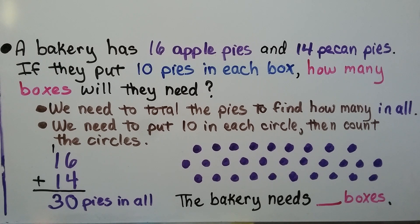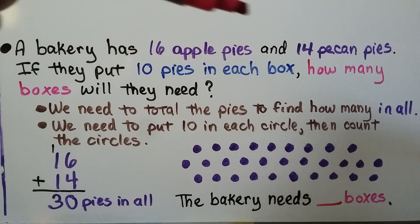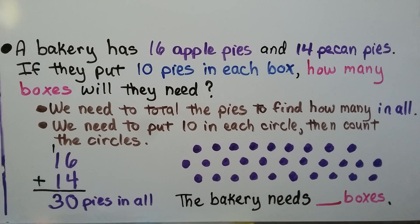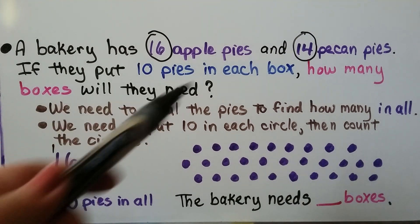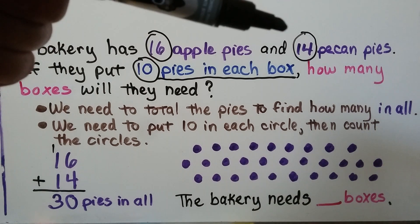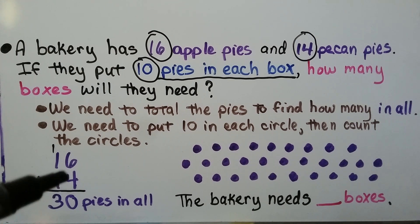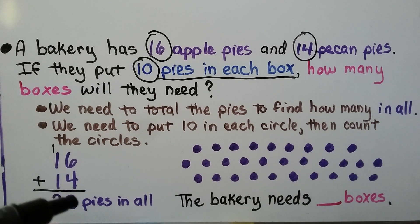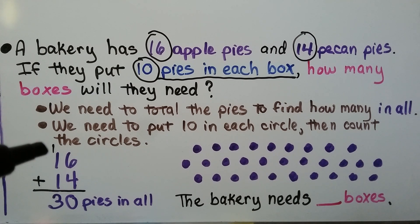A bakery has sixteen apple pies and fourteen pecan pies. If they put ten pies in each box, how many boxes will they need? Our important numbers are sixteen and fourteen for the number of pies, and ten pies per box. First we find how many pies in all: sixteen plus fourteen. In the ones place, six plus four makes ten — we regroup and put zero in the ones place. Then we add the tens column: one, two, three tens. We have thirty pies in all.